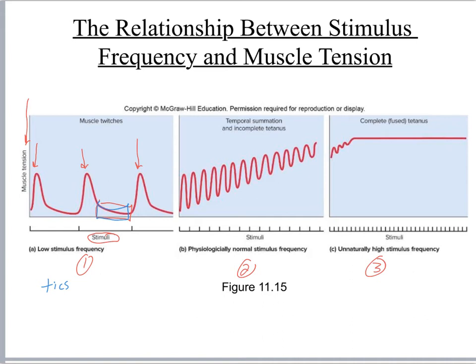In graph two, showing more normal contractions, there's not enough time between signals for the muscle to return to resting length. Each contraction gets a little stronger and signals are closer together — this is temporal summation and also represents incomplete tetany, which is a normal muscle contraction.